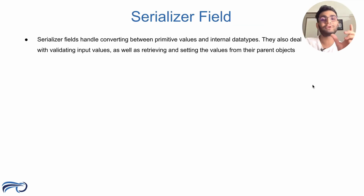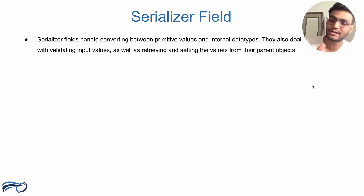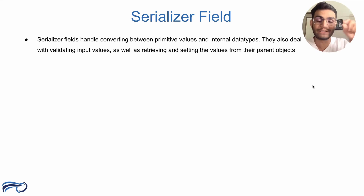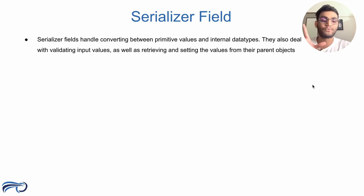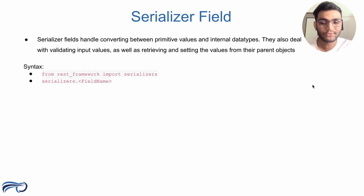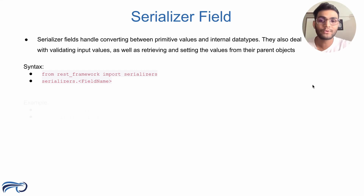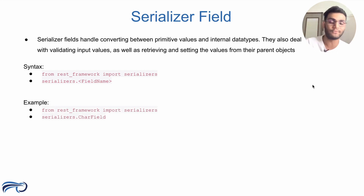Serializer field handles converting between primitive values and internal data types. They also deal with validating input values as well as retrieving and setting values from the parent objects. For now, understand what the syntax for the Serializer is — we import from the REST framework and use Serializer dot field name. For example, one of the fields is CharField, so we write Serializer.CharField.